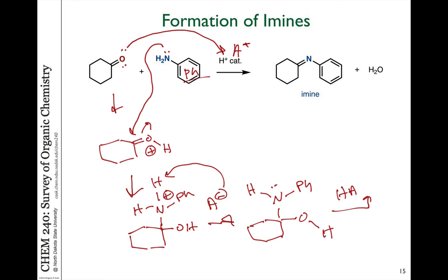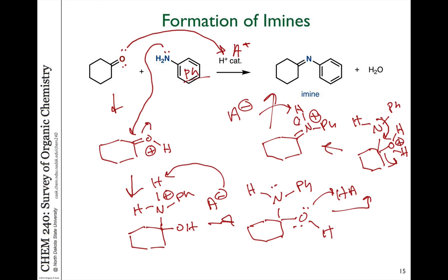That acid can protonate the oxygen to make it into a good leaving group. That oxygen can depart. We get to a molecule which is assisted by the lone pair and the nitrogen to form the nitrogen as a plus charge, and then the acid catalyst is regenerated again by taking the proton off to generate our imine product.